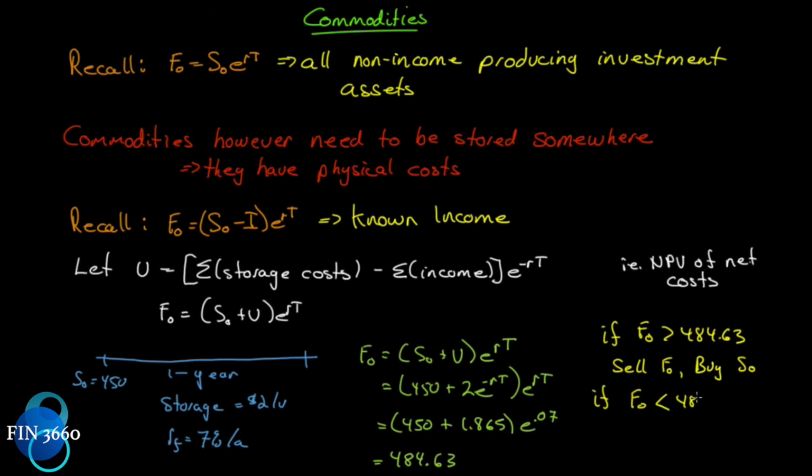If, on the other hand, F₀ is less than $484.63 - remember, we're buying low and selling high - well, this is the low side. So now we're going to be long a futures contract at F₀, and we're going to sell the underlying asset at S₀. This assumes that we're the current owner of the asset; otherwise, we would have to arrange to borrow it, which might introduce a loan cost on the physical commodity itself. So if we sell, we'll get the $450, plus we'll save the storage costs. We're prepared to pay it if we're the owner; we'll save it, so this formula still holds for both sides of this arbitrage argument.